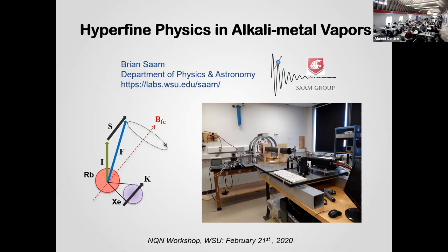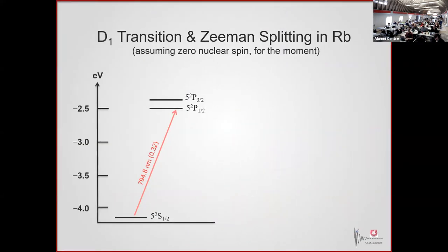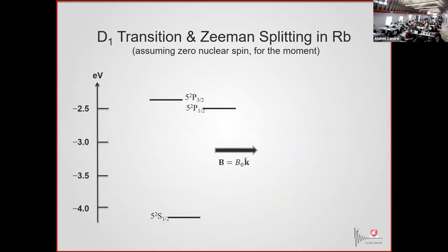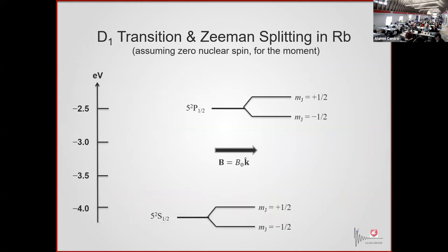I'm going to talk about alkaline metal atoms. Most of you are probably familiar with an energy diagram that looks like this. We deal a lot with rubidium, working in vapor cells at room temperature and above. This is the D1 transition that we deal with a lot — 795 nanometers. If I apply a small magnetic field, I can Zeeman-split both of these levels.